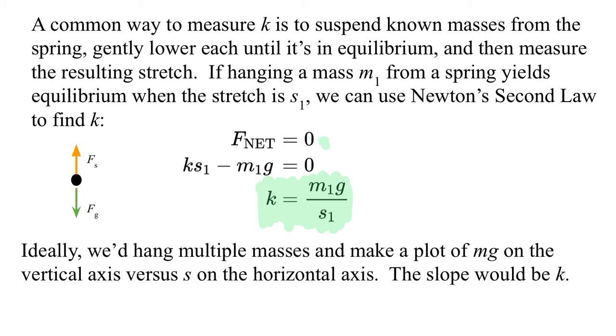Ideally, of course, we wouldn't plot one because we know that's always risky. We'd hang multiple masses and make a plot of Mg on the vertical axis versus S on the horizontal axis, and that would tell us that the slope would be k because we would have Mg is kS, so we see that the vertical is the horizontal times some constant, the slope is the constant. So this is the slope. That would look something like this.